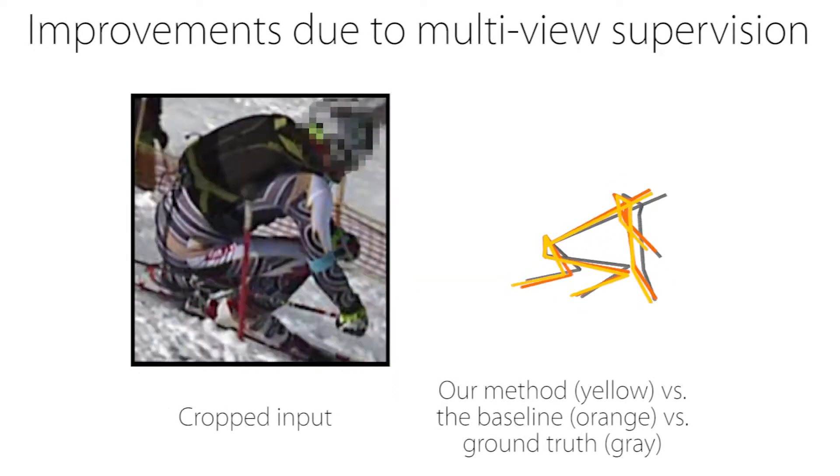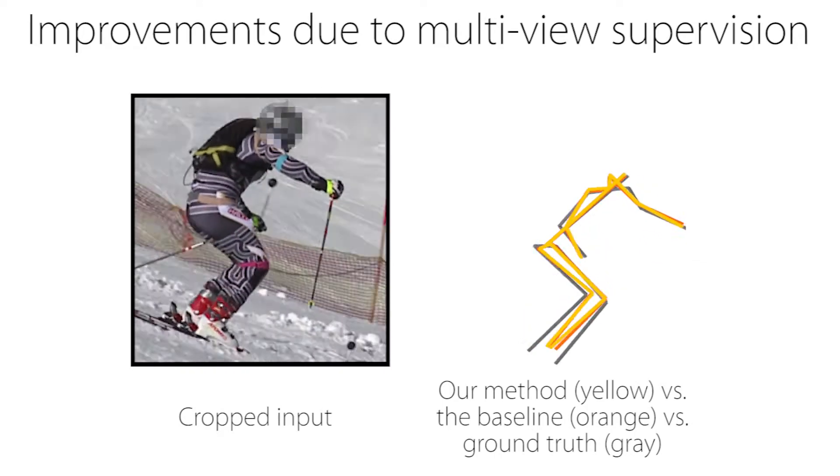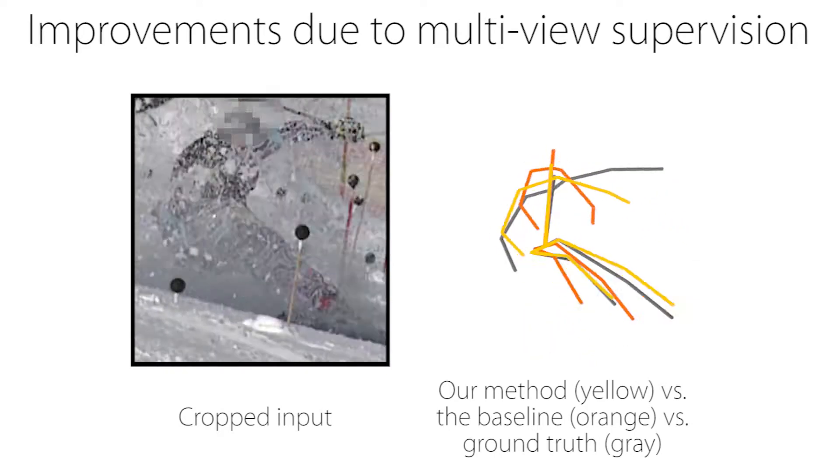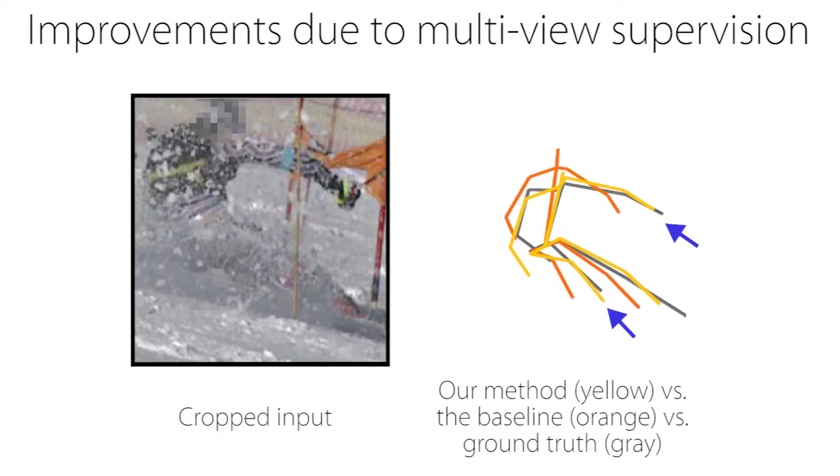We overlaid our reconstruction in yellow, the baseline in orange, and ground truth in gray.